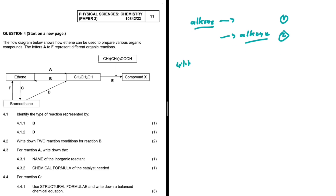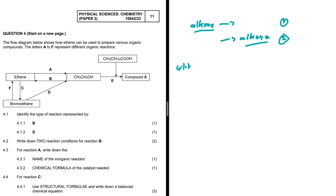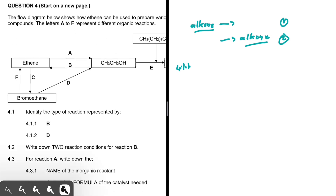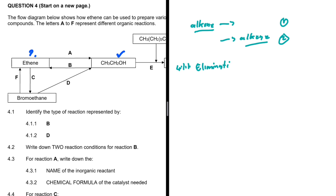For 4.1.1, identify the type of reaction represented by B. Does reaction B start with an alkene? No — it starts with an alcohol, so it cannot be an addition reaction. Does it end with an alkene? Yes. As soon as we see that, we know it is an elimination reaction because it ends with an alkene. That is 4.1.1.